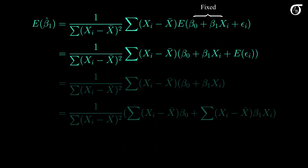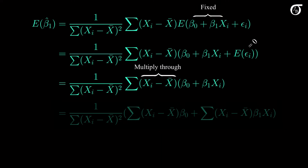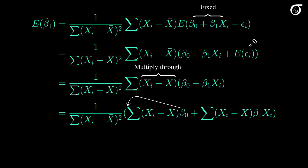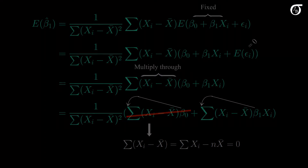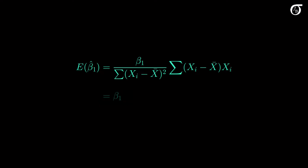Now we can substitute in y sub i from the model, which is beta0 plus beta1 times x sub i plus epsilon sub i. Epsilon is the only random variable; beta0, beta1, and the x's are fixed values that can come outside of the expectation. We make use of the assumption that the expectation of each epsilon is 0, so that term disappears. Bringing the summation through and breaking up the beta0 and beta1 terms, beta0 is a constant that comes outside the summation, and the sum of these deviations is always 0, so that term drops out. Beta1 comes outside the summation, and we now have beta1 over the sum of squares of x times the sum of squares of x — those terms cancel, and we end up with beta1. The least squares estimator beta1 hat is an unbiased estimator of beta1.